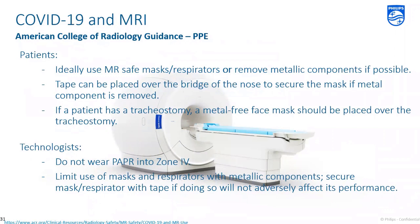MRI poses a unique challenge when it comes to PPE use, as many common masks and respirators contain ferrous components. The ACR recommends the use of MR-safe masks and respirators for patients if available. Alternatively, if possible, remove metallic components from the mask or respirator. Tape can be used across the bridge of the nose if metallic components are removed. Patients with tracheostomies should have a mask placed over the tracheostomy. MRI personnel should limit the use of masks and respirators with metallic components, only removing those components if doing so would not adversely affect PPE performance. Technologists and other MR personnel should not wear PAPR into Zone 4.